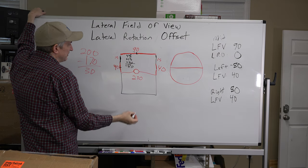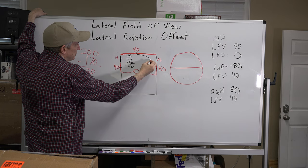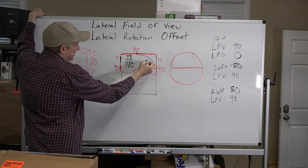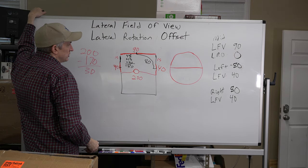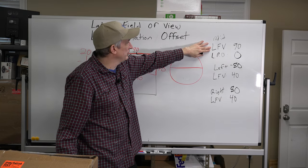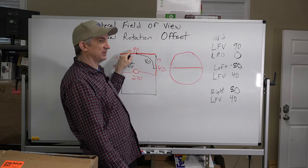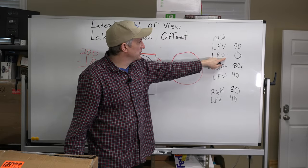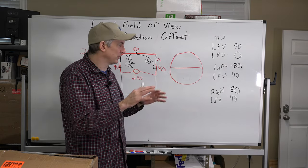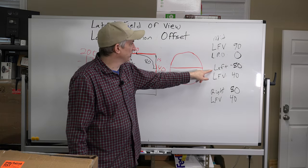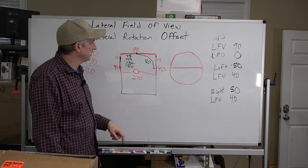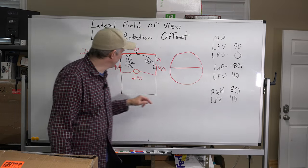And on the left side it'd be negative 80, and on the right side we're rotating this around, and it's positive 80. So that would make over here on our middle screen, lateral field of view we decided again was 90, lateral rotation offset zero degrees, because it's in the center of our field of view, so we don't want to rotate that at all.